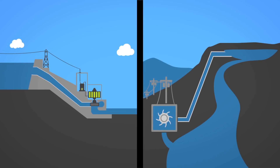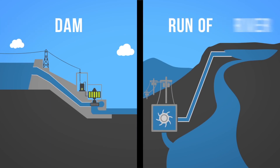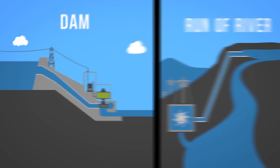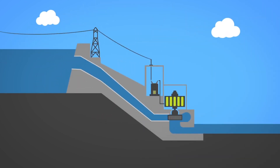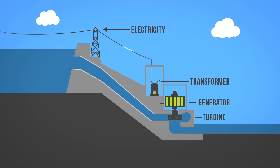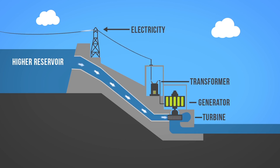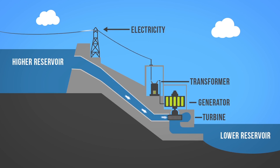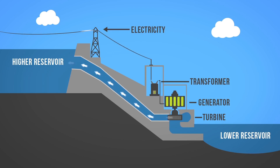There are two main types of hydroelectricity production: dams and run of river. Hydro dams utilize the potential energy from dammed water to produce electricity. A dam is a large barrier constructed to raise the level of water and control its flow. The elevation created by the dam creates gravitational force for turning the turbine when water is released. Some dams also contain an additional reservoir at their base where water is stored to be pumped to the higher reservoir for release when electricity is in demand. This is referred to as pumped storage hydro.